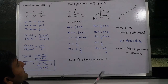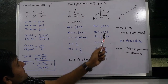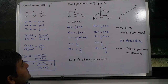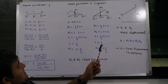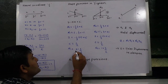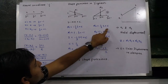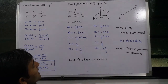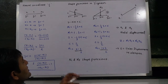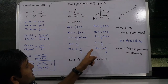For shape function n2, I apply unit displacement at node 2. Here the slope m is positive 1/2, so n2 equals (1/2)*zeta plus c. Applying the condition n2 equals 1 when zeta equals plus 1: 1 equals 1/2 plus c, giving c equals 1/2. Therefore, n2 equals (zeta plus 1) divided by 2. These are the shape functions at node 1 and node 2 respectively.